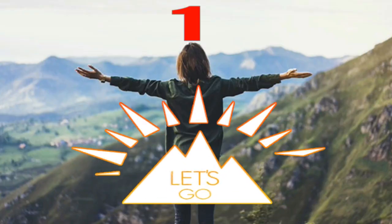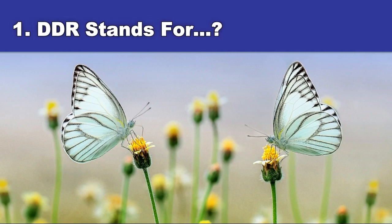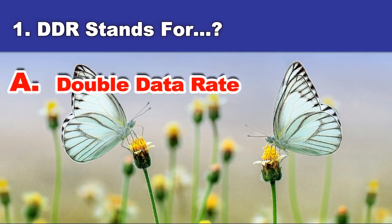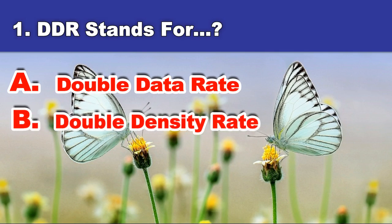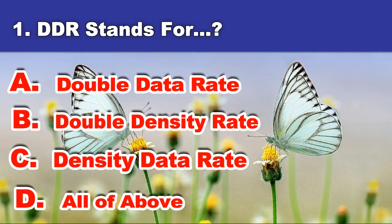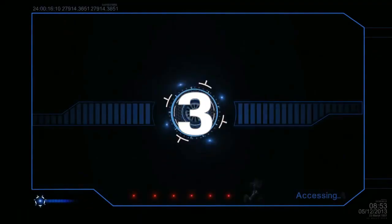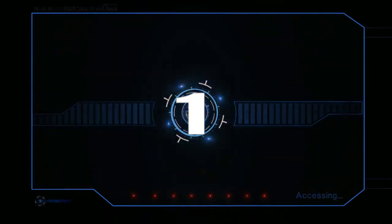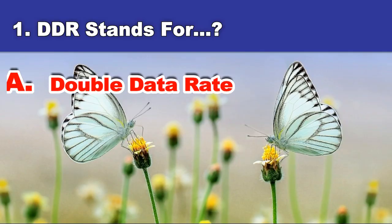First question. DDR stands for? A. Double data rate. B. Double density rate. C. Density data rate. D. All of the above. And the answer is: Double data rate.